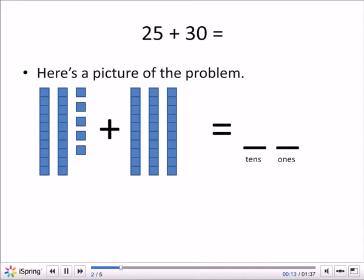25 is the first group. There's two groups of 10: 10, 20, and then there's five ones: 1, 2, 3, 4, 5.